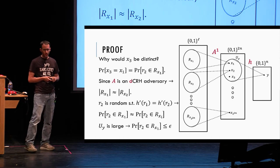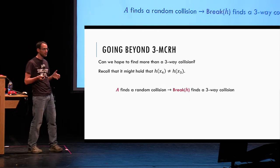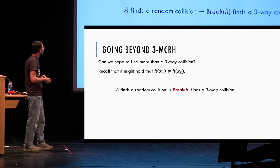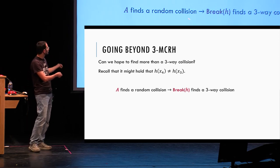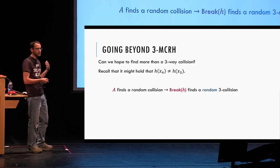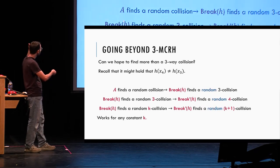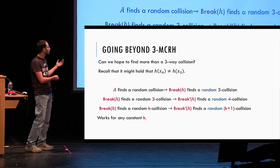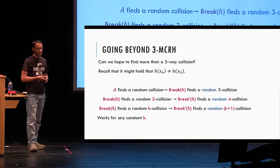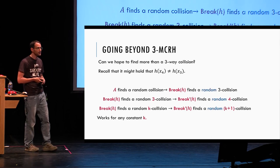The same argument holds for x2. The way the proof works is by showing we found a random three-way collision — that's why the elements are all distinct, they are random elements conditioned on colliding. We can now do this recursively: use this algorithm that finds a random 3-way collision as a starting point to construct a new algorithm that finds a random 4-way collision, and so on from k to k+1. This works for any constant k, though there is a major blowup in running time at each step, so it cannot be extended beyond constant k.